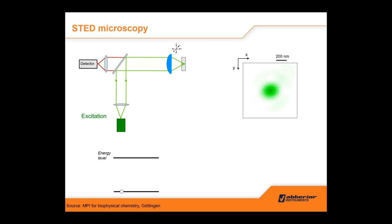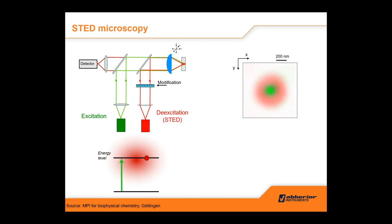Irrespective of how good your optics actually are, your point will always be diffraction-limited. So even if you have a single point emitter, you will see a big blur in the microscope of around half the wavelength of light. There's no option to change or improve the resolution further on the optics part. What Stefan Hell came up with when he invented STED microscopy was to use the fluorophores rather than the optics to change your resolution. You use an excitation laser to excite your fluorophores, then integrate a second donut-shaped STED laser beam that acts on the excited-state molecules.